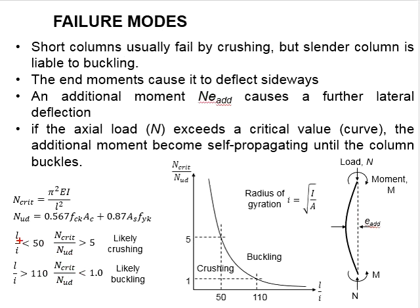If you look at the ratio of less than 50, based on the curve here, you can expect the axial resistance of the columns to be beyond 5 times the critical loads of the axial of the member. This represents a typical short column, and the failure of the columns is normally going to be crushing.